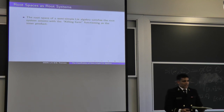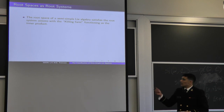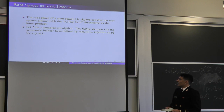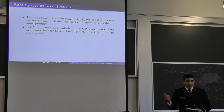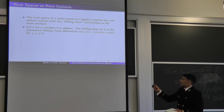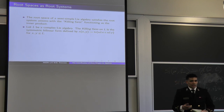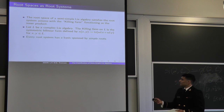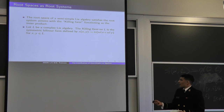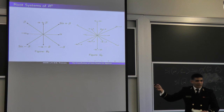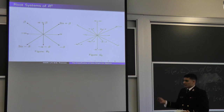The root space from our root space decomposition actually forms a root system when we use the Killing form as our inner product. The Killing form is defined as κ(X, Y) = trace(ad(X) ∘ ad(Y)). Since ad(X) are linear maps, we can represent these as matrices by choosing a basis, and then the trace is just the sum of the diagonal entries. Every root system has a base, which we call the simple roots. Looking back at the root systems of R², they are all linear combinations of α and β, so in that case α and β are our simple roots.